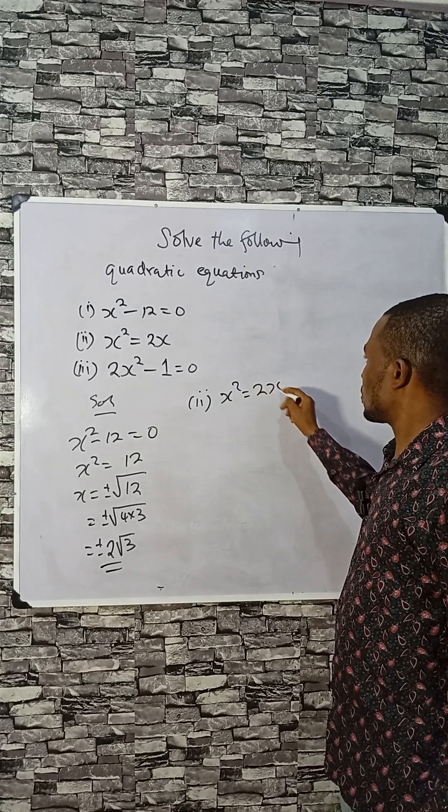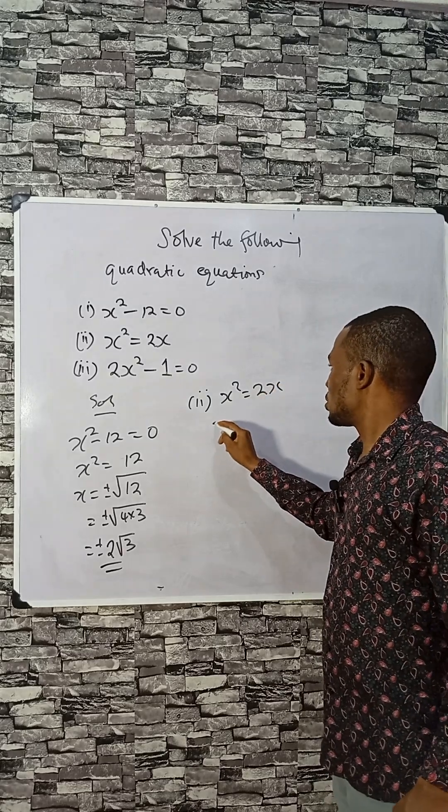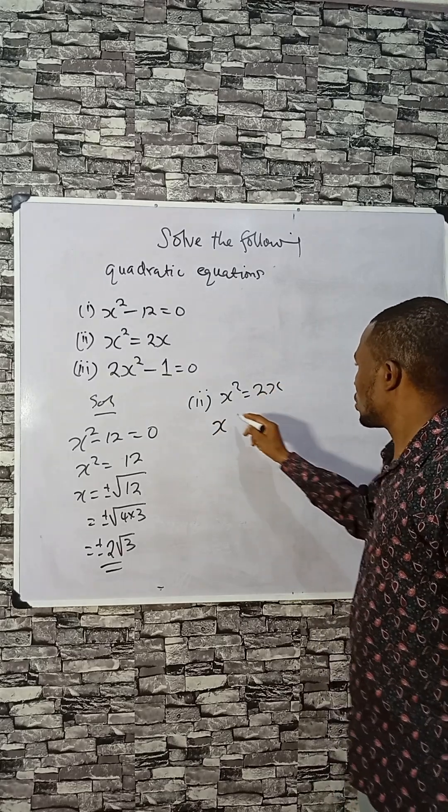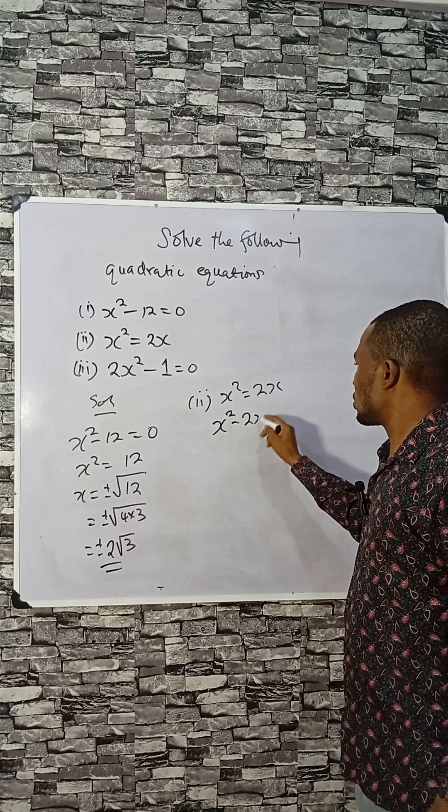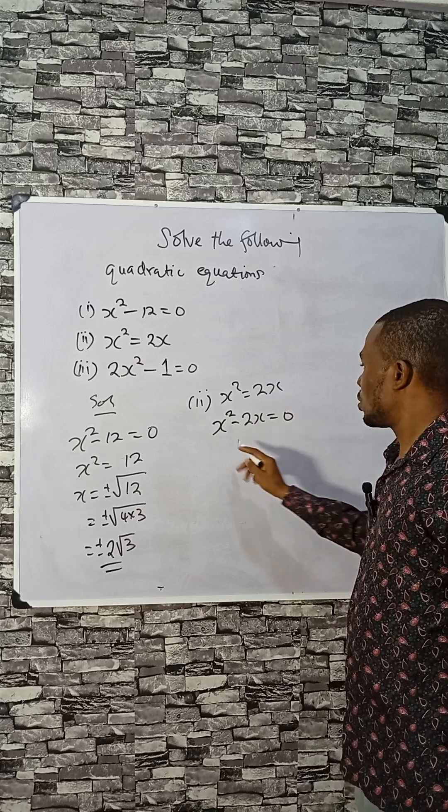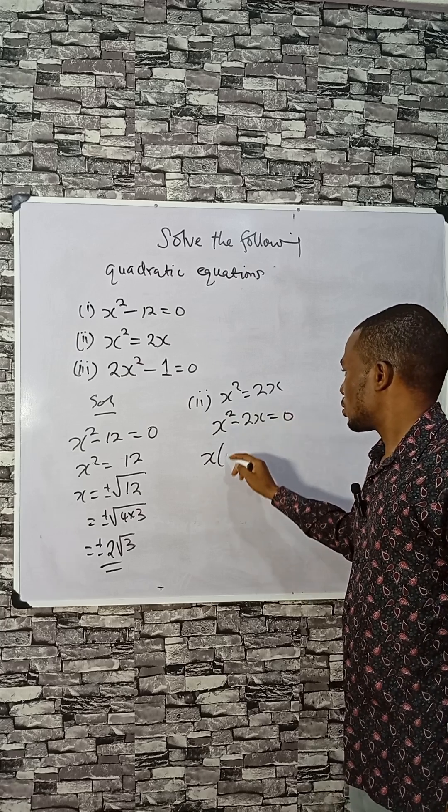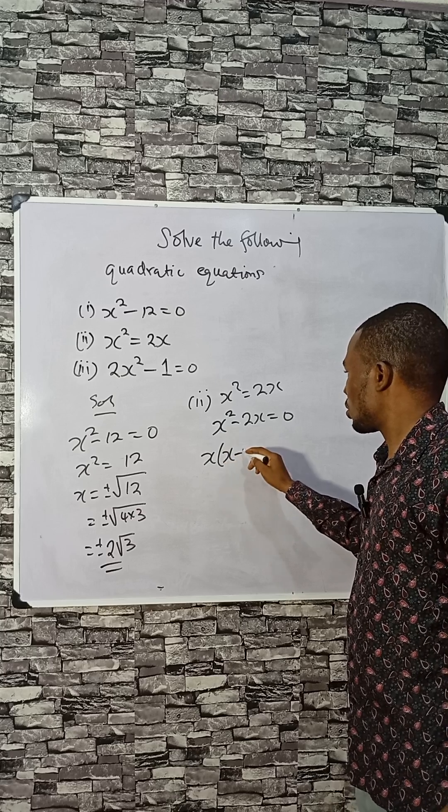equals 2x. That means from here, x² - 2x = 0. You can factorize here, x is common: x(x - 2).